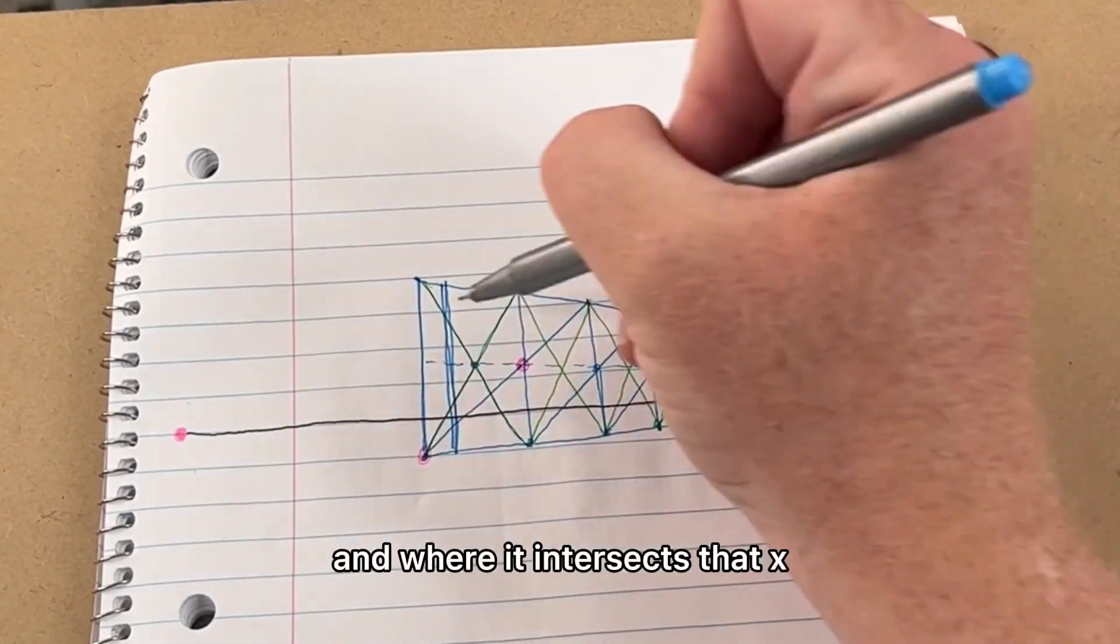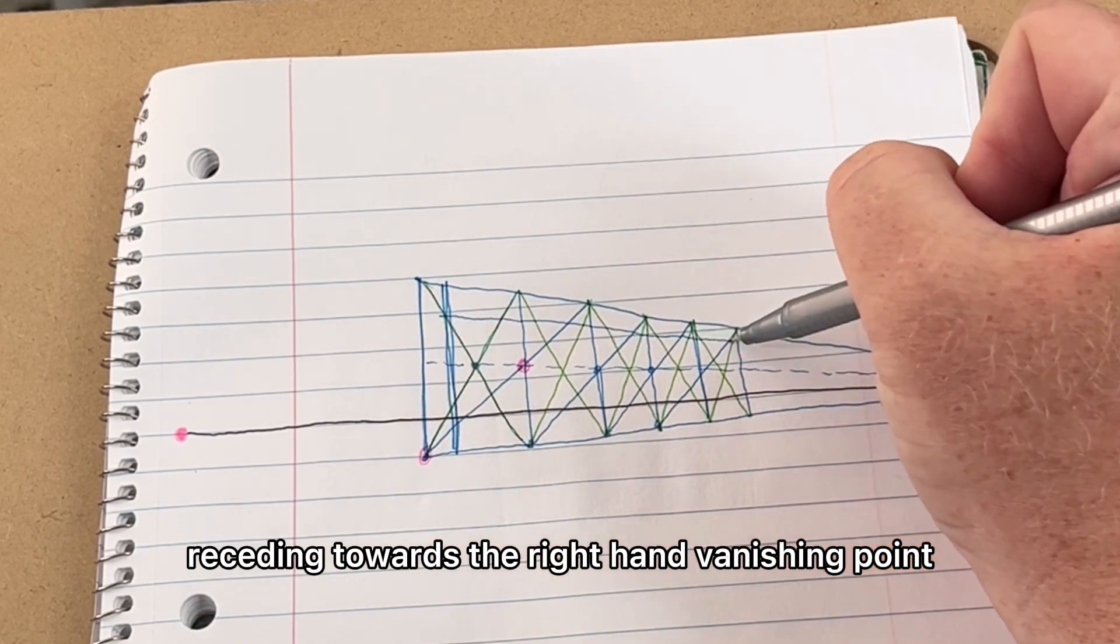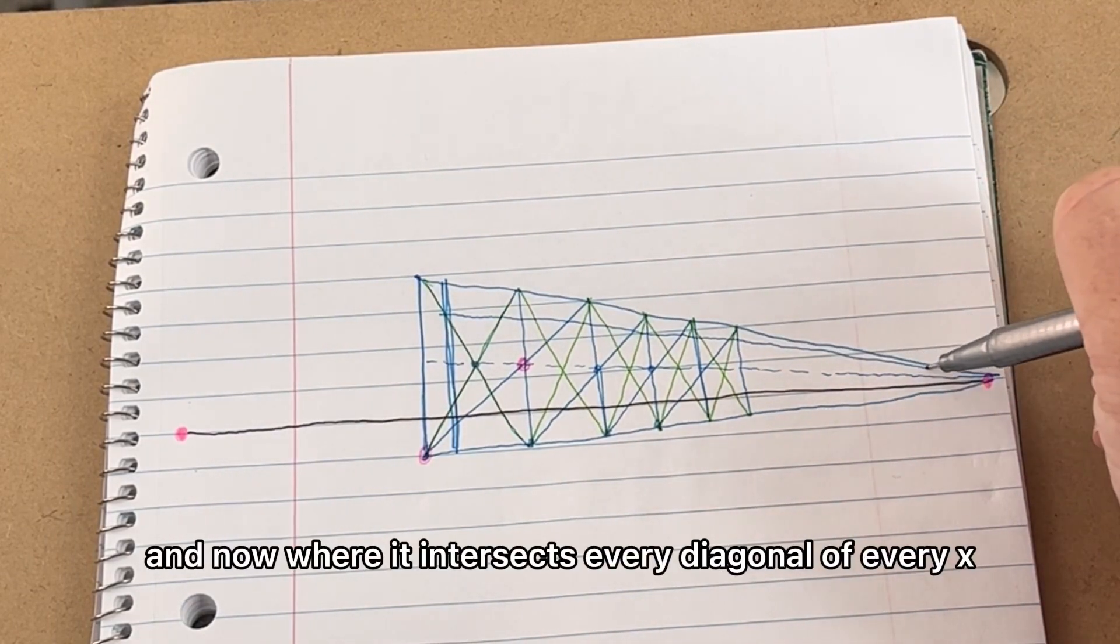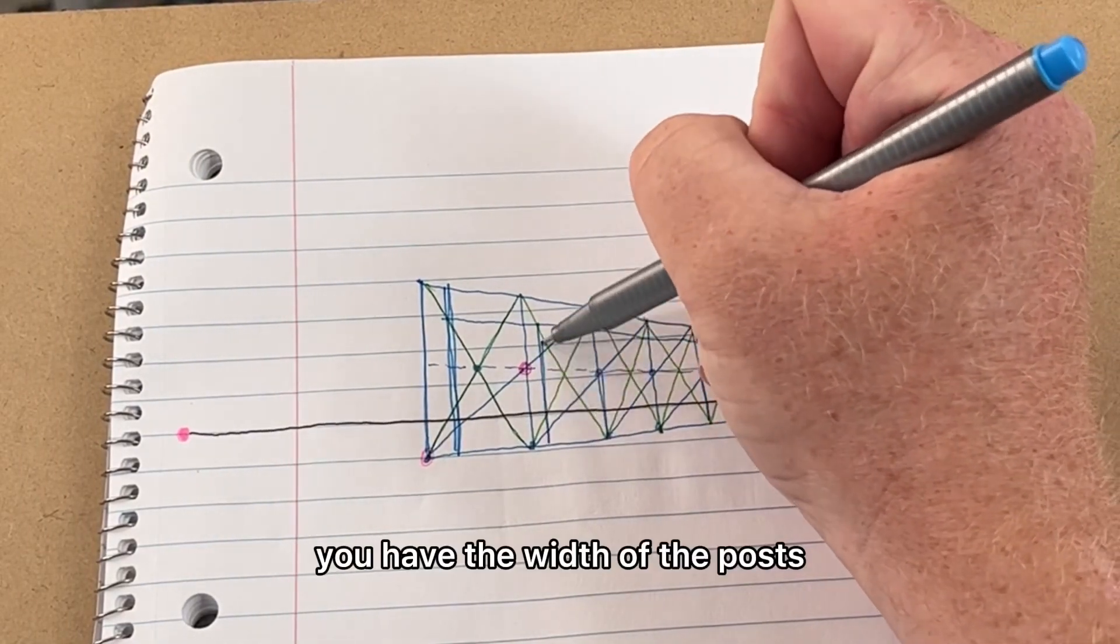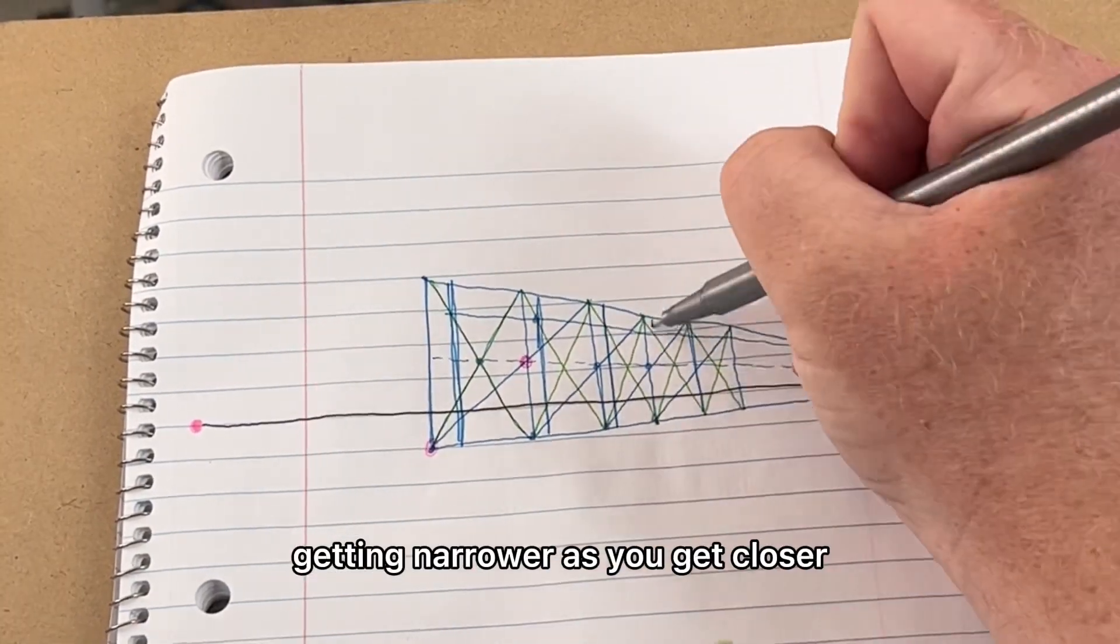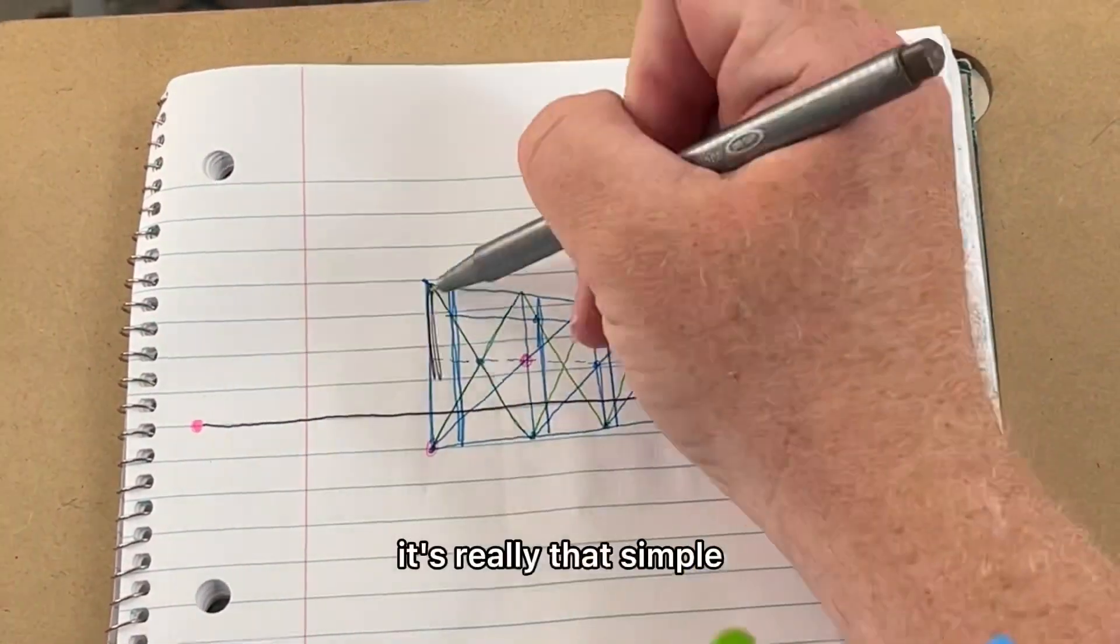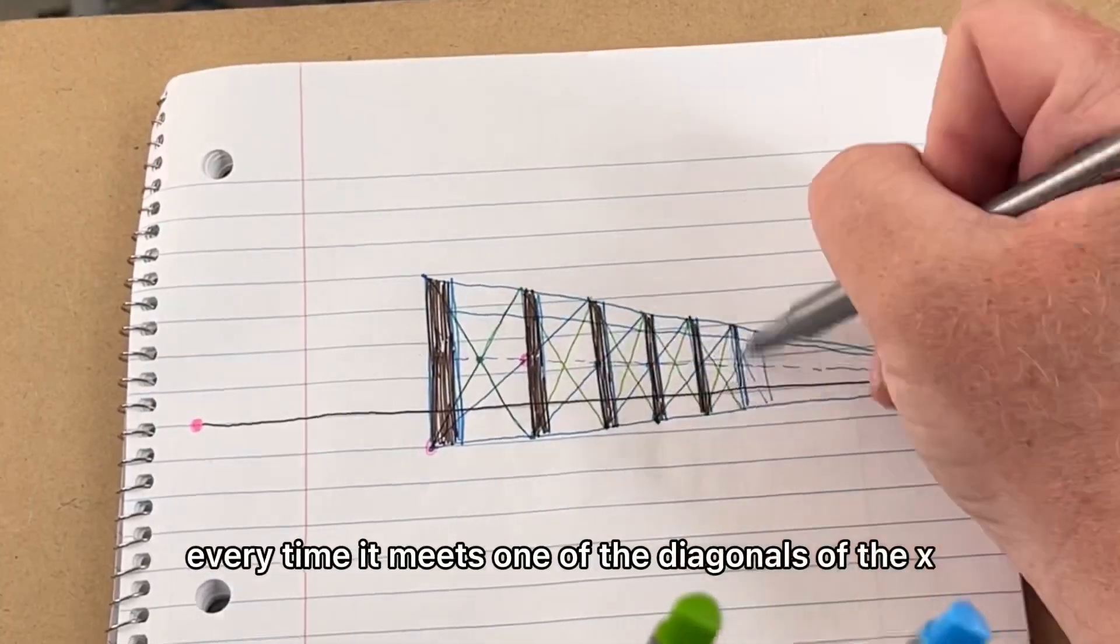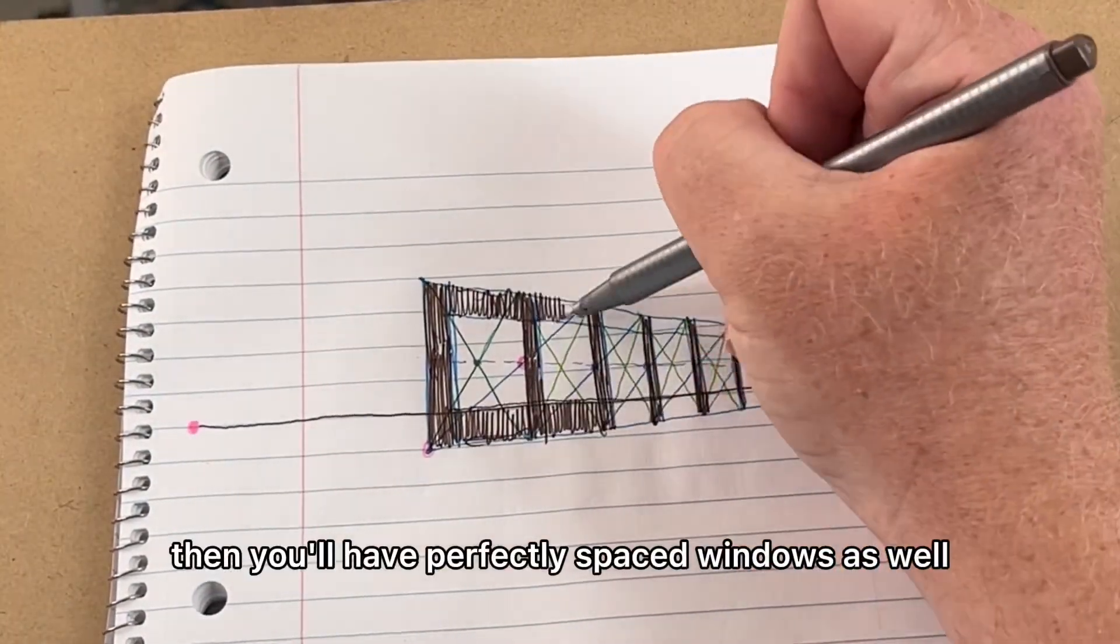And where it intersects that X, draw a line receding towards the right-hand vanishing point. Now, where it intersects every diagonal of every X, you have the width of the posts getting narrower as you get closer to the vanishing point. It's really that simple, and if you have your line turn the corner every time it meets one of the diagonals of the X, then you'll have perfectly spaced windows as well.